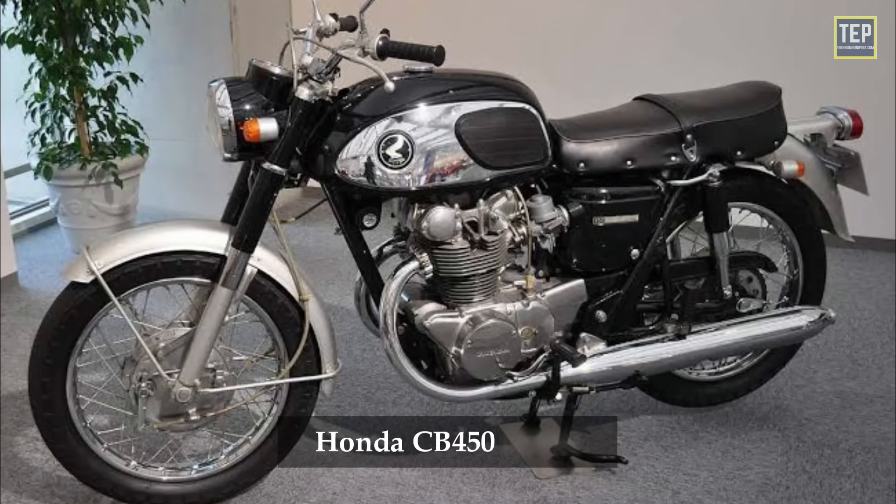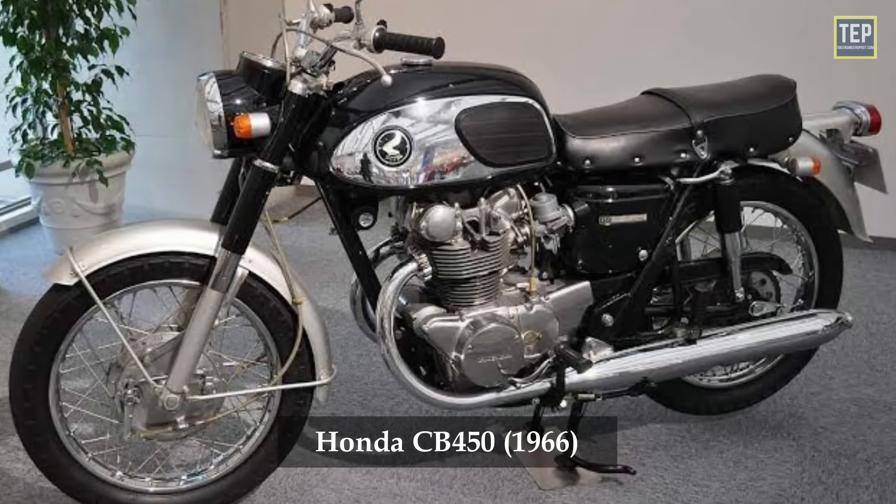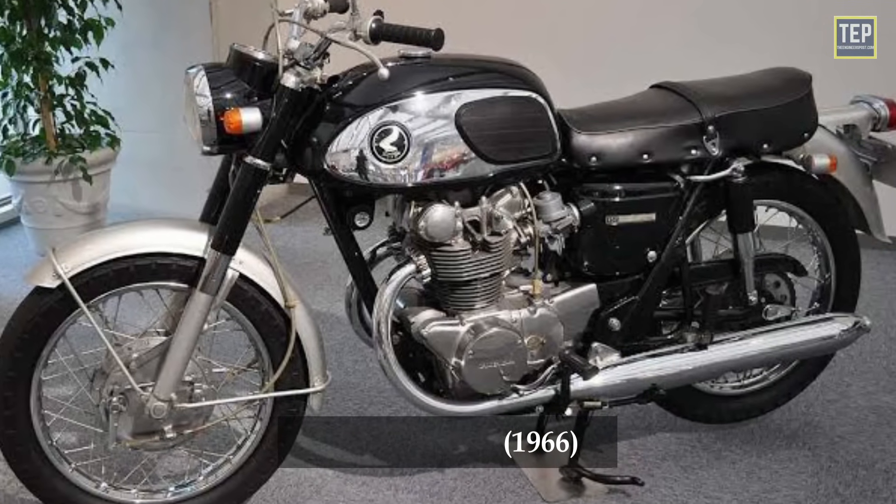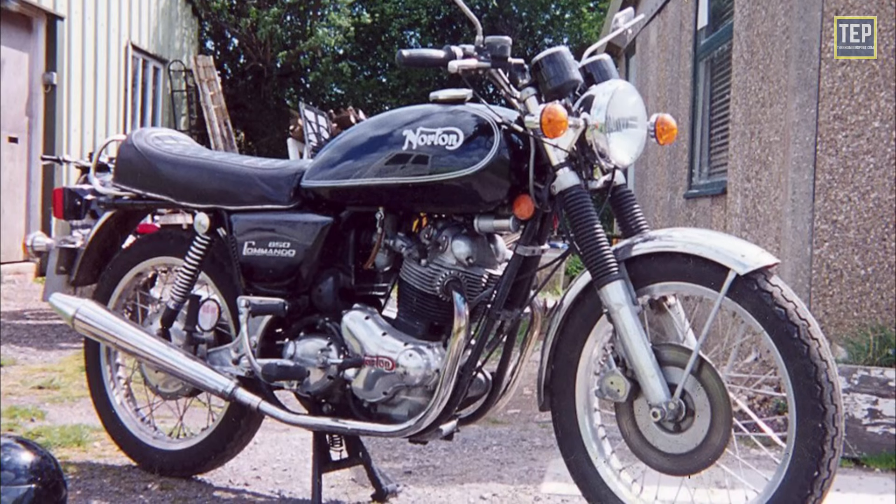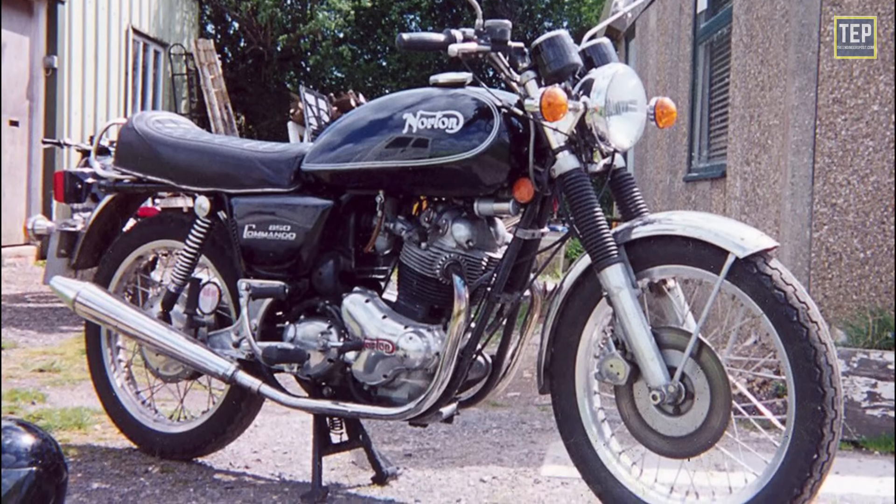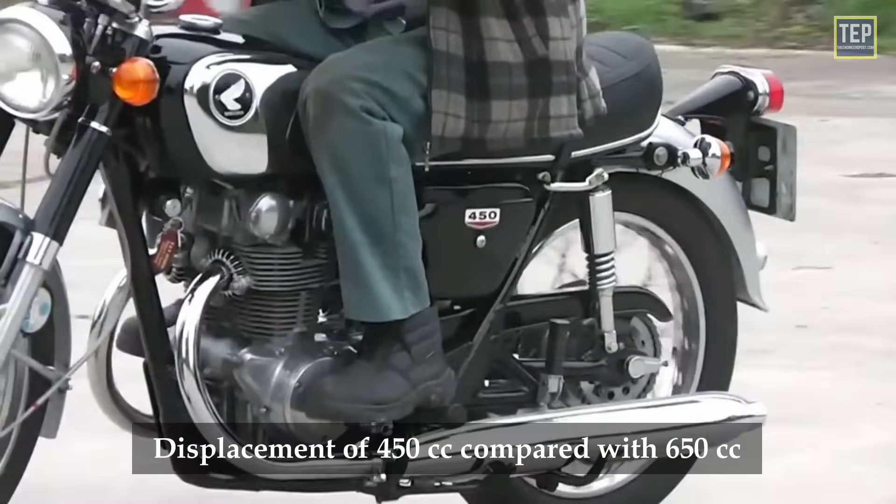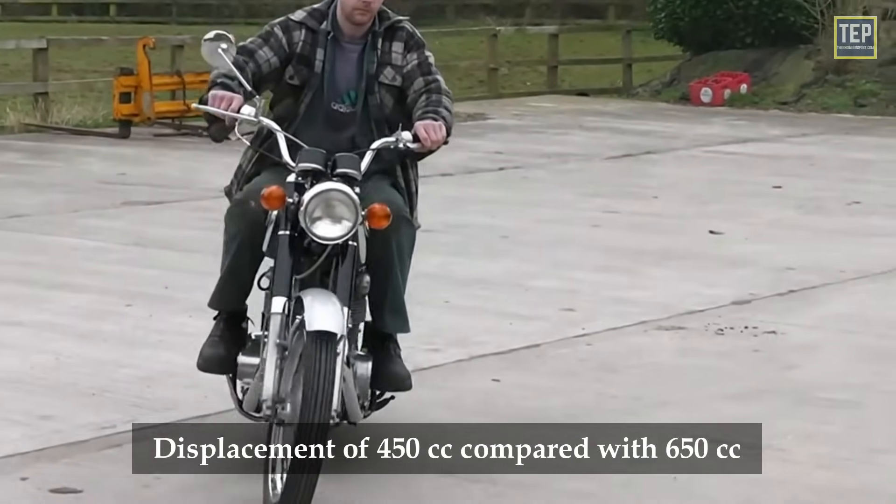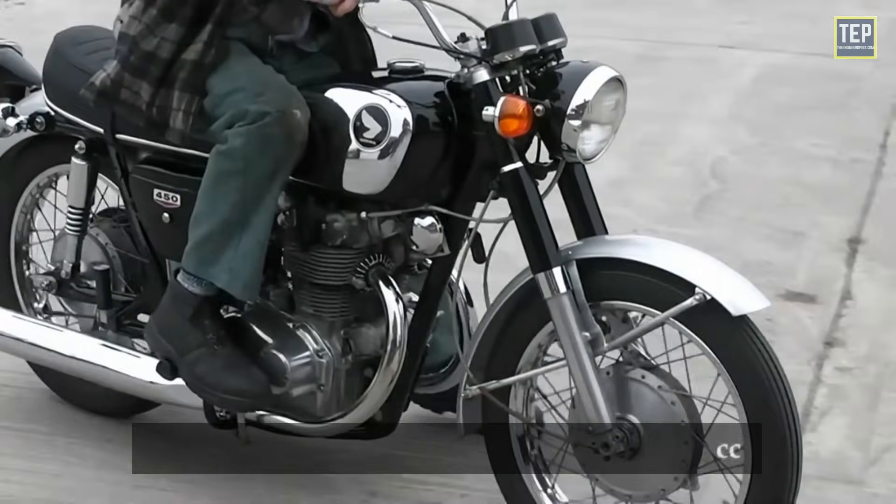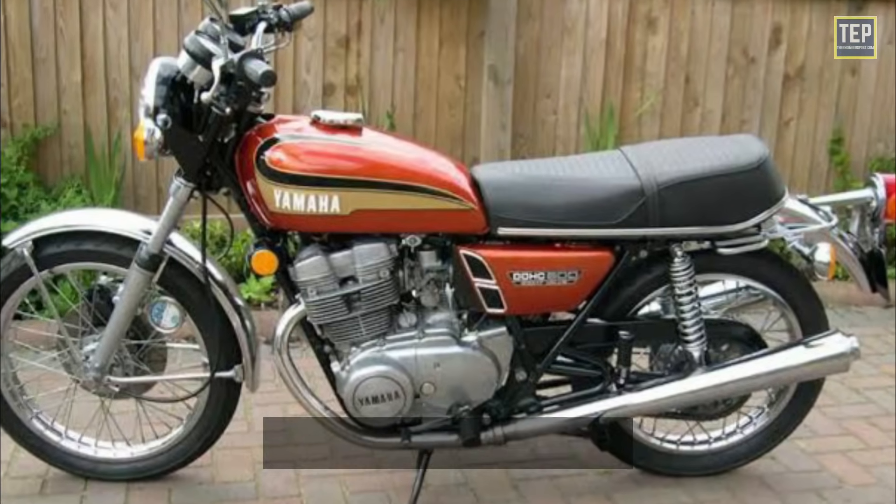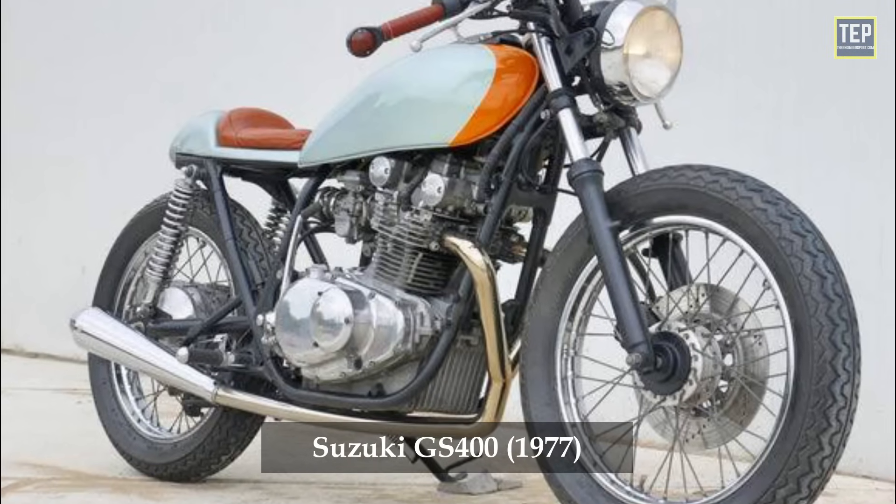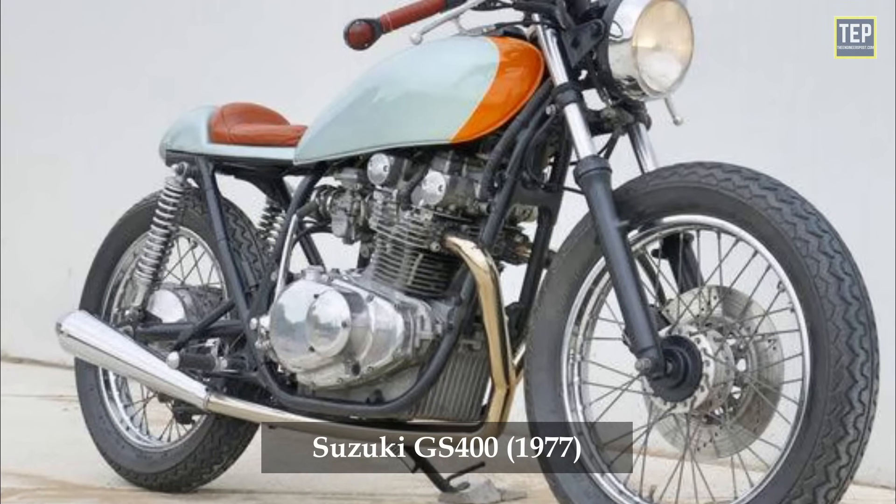For example, the Honda CB450 180-degree crankshaft engine has a similar power output to modern British 360-degree crankshaft engines, despite having a smaller displacement of 450 cc, compared with 650 cc. The Yamaha TX500 and the Suzuki GS400 had a 180-degree crankshaft and a balance shaft.